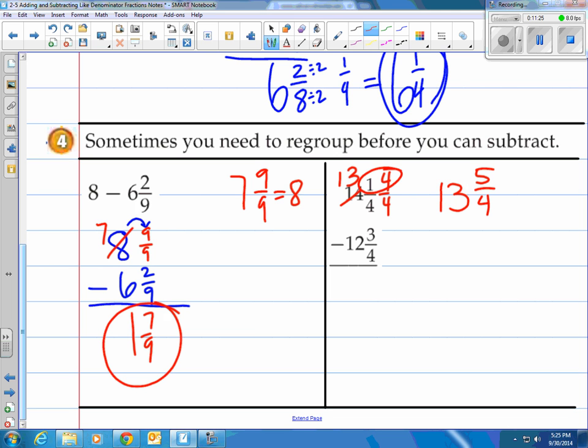Now we have 12 and 3 fourths on the bottom, and we're going to subtract. We now have enough fourths to subtract the 3 fourths. So we have 5 fourths minus 3 fourths, which is just 5 minus 3 on top. That would be 2 on top, 4 on the bottom. And then 13 minus the 12, which would be 1. Now, of course, 1 and 2 fourths, this is actually equal to 1 half. So it's 1 and 1 half.